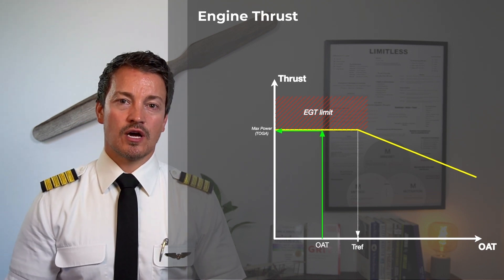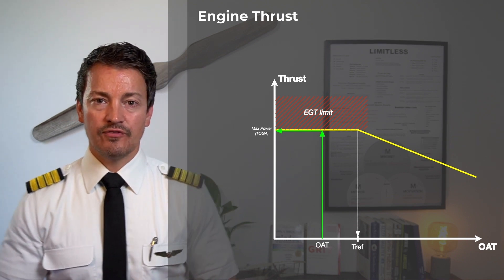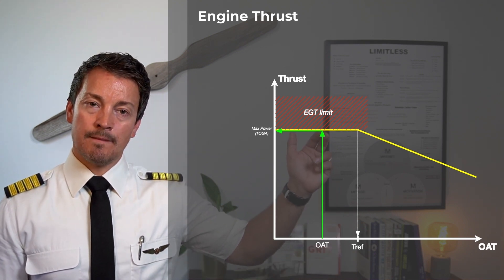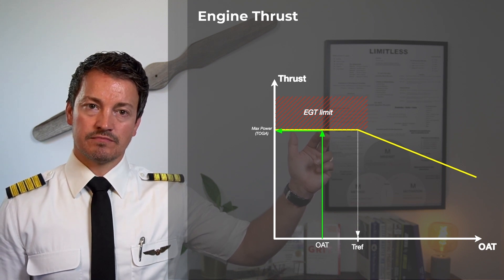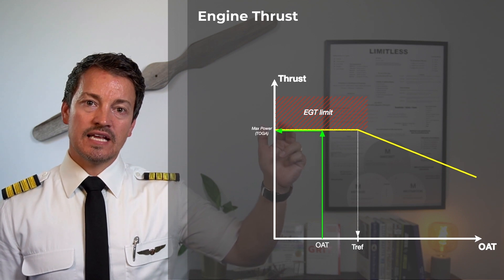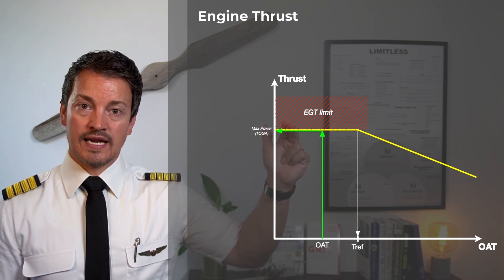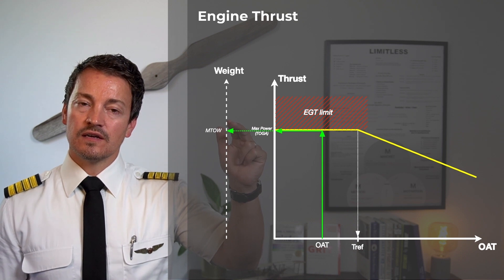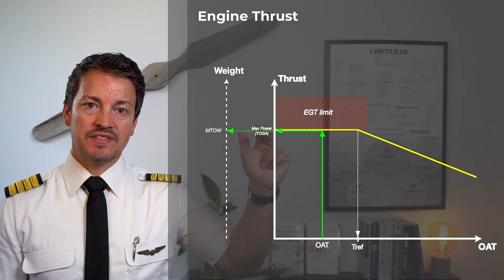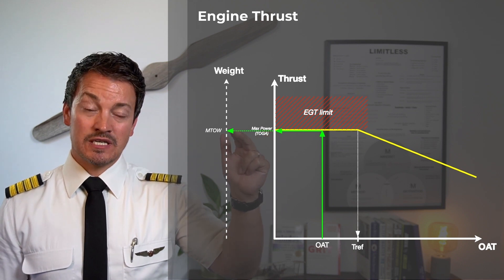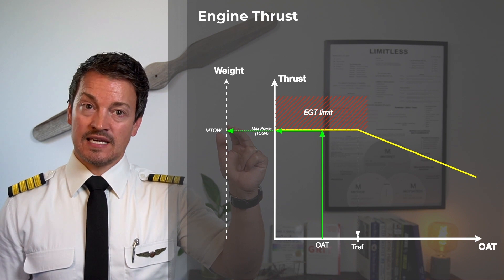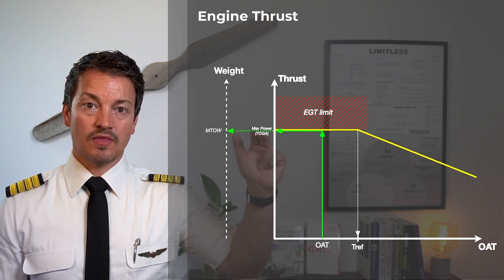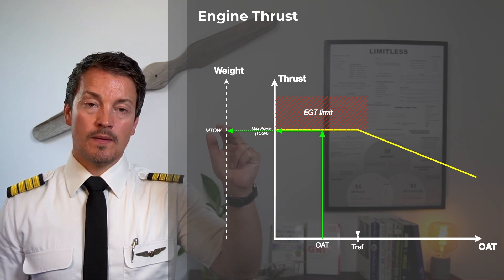How does that relate to flexible temperature? If our outside air temperature is very cold, that produces a maximum power output — and that gives us maximum power, which is TOGA power. We can't get any higher power setting than that. We can actually relate that directly to a maximum take-off weight, because if that is the maximum power available today, then that must be the maximum weight we can take. Maximum power equates to maximum take-off weight.